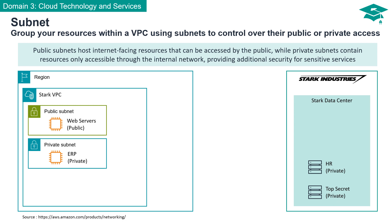Public subnets are designed to host resources that need to be accessible from the Internet. They typically contain Internet-facing services like web servers or load balancers. In this example, Stark Industries' web servers are located inside the public subnet. In contrast, private subnets contain resources that should not have direct Internet exposure — often reserved for sensitive services or databases accessed only through the internal network, such as Stark Industries' ERP server.